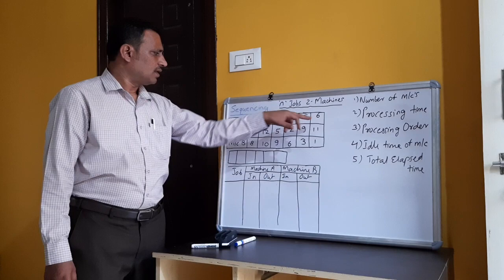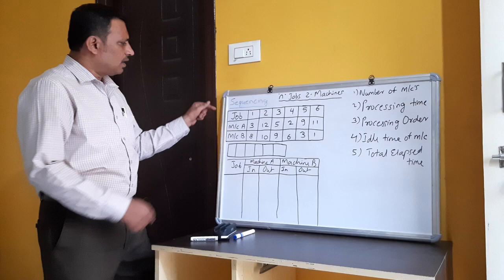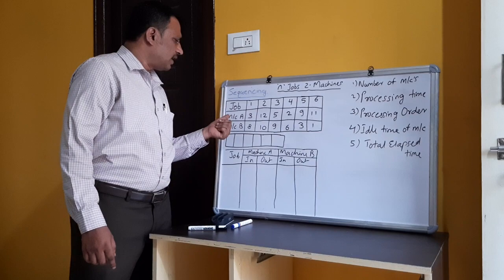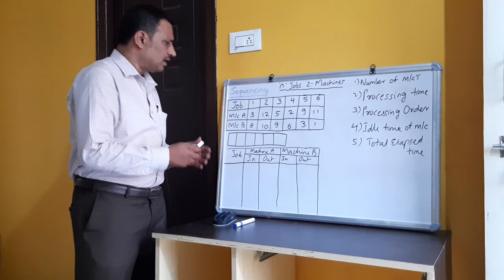We have one turning machine and another threading machine, that is machine A and machine B. To complete job one on machine A it takes three hours, on machine B it takes eight hours, and so on for all six jobs. Before determining the sequence, we will first understand how to make the sequence.